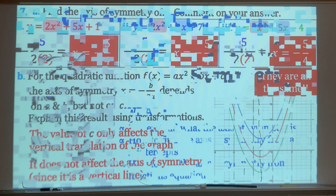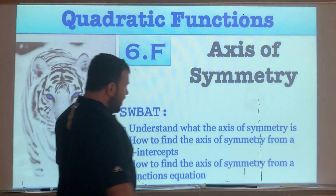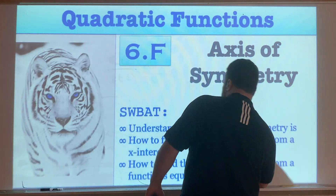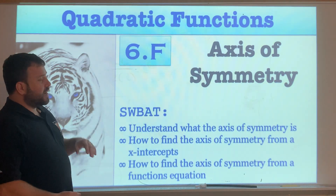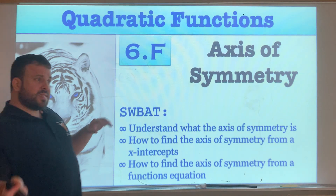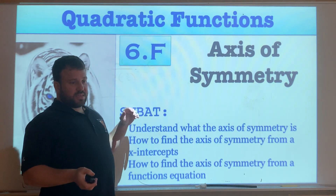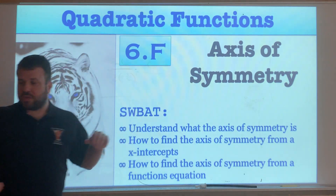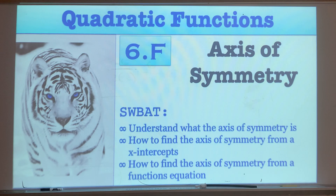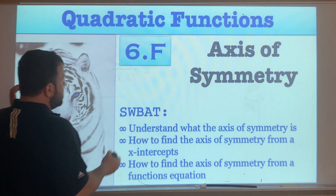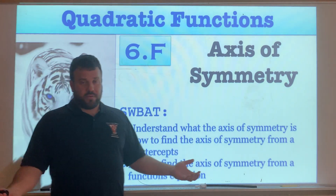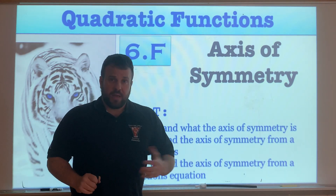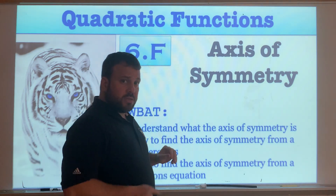That concludes our relatively straightforward axis of symmetry lesson. This connects directly to our next lesson — 6g — which will cover the vertex. You'll use your axis of symmetry to set up finding the vertex. Until the next lesson, see you then.